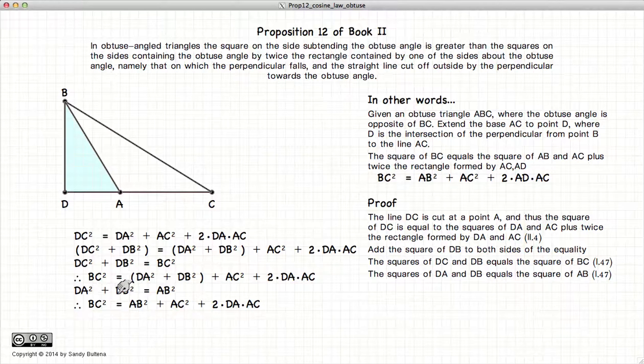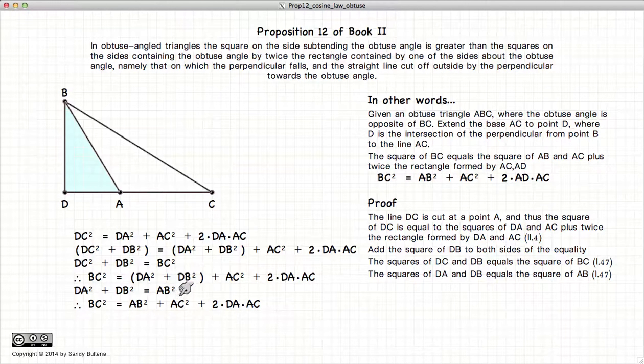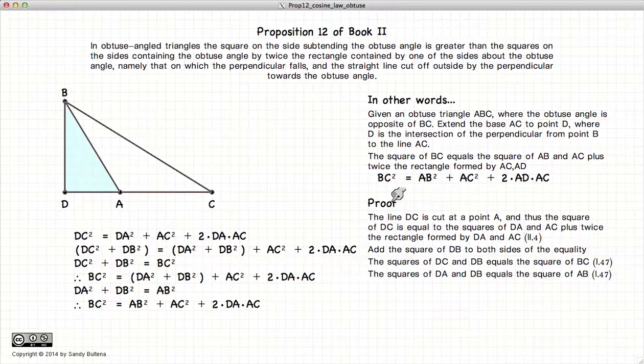we end up with BC squared equals AB squared plus AC squared plus twice AD times AC, which is the original proposition.